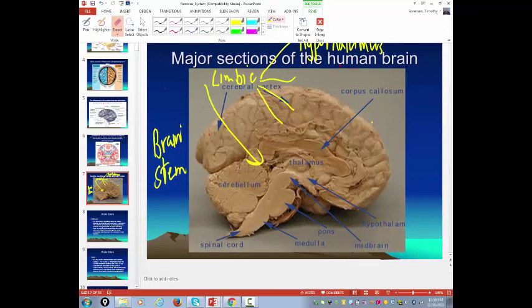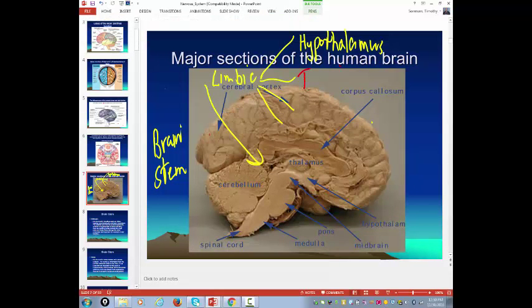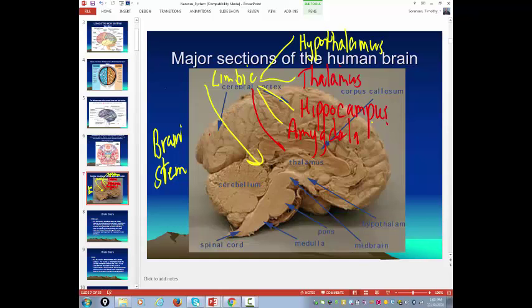So you got the hypothalamus. Then you have the thalamus. We'll talk more about that. I'm just telling you the parts of the limbic system. Then you have the hippocampus. Hippocampus comes from the Latin word seahorse because the hippocampus looks like a seahorse. And then you have the amygdala.